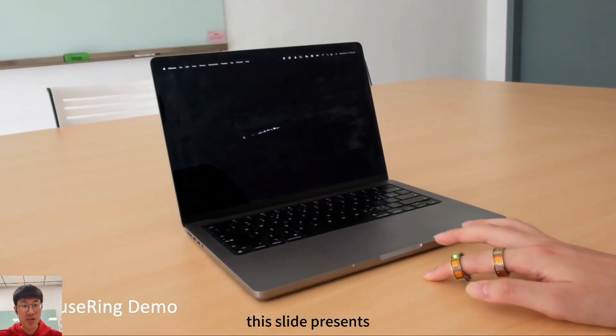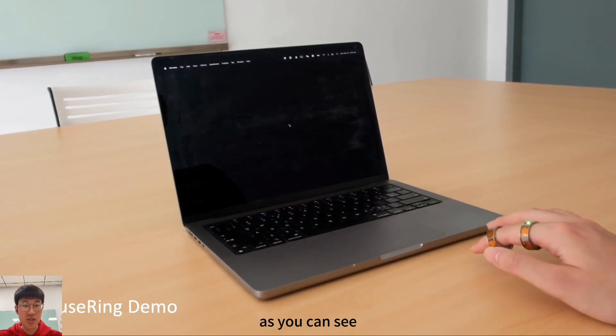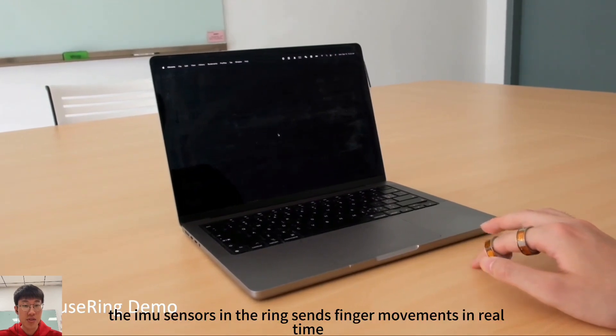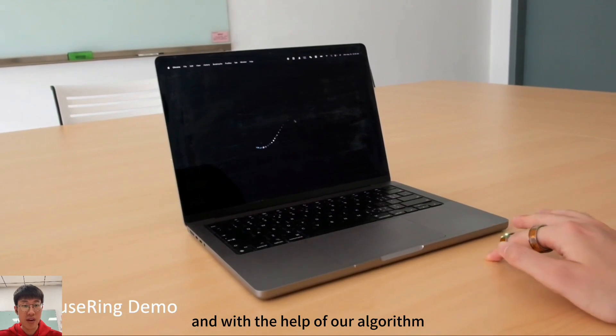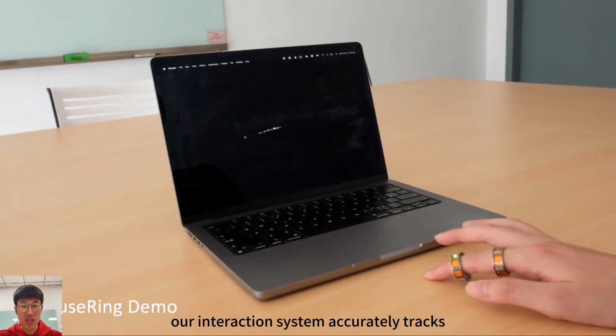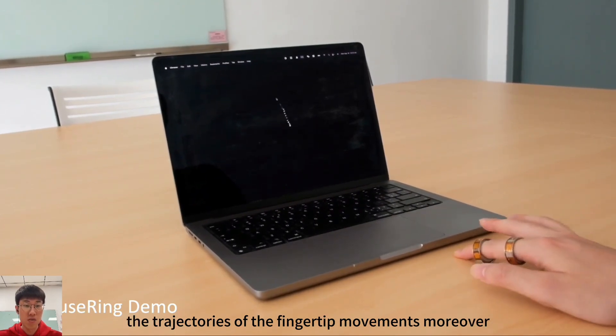This slide presents a video demonstration of MouseRing in action. As you can see, the user is wearing two rings on the index finger. The IMU sensors in the ring send finger movements in real time, and with the help of our algorithm, which I will delve into later, our interaction system accurately tracks the trajectories of the fingertip movement.